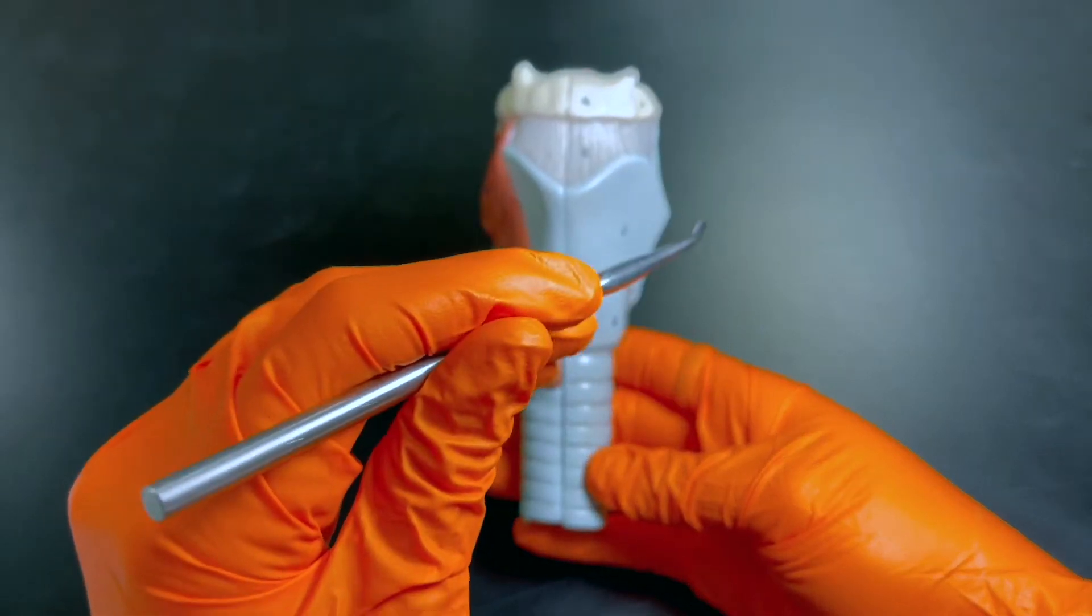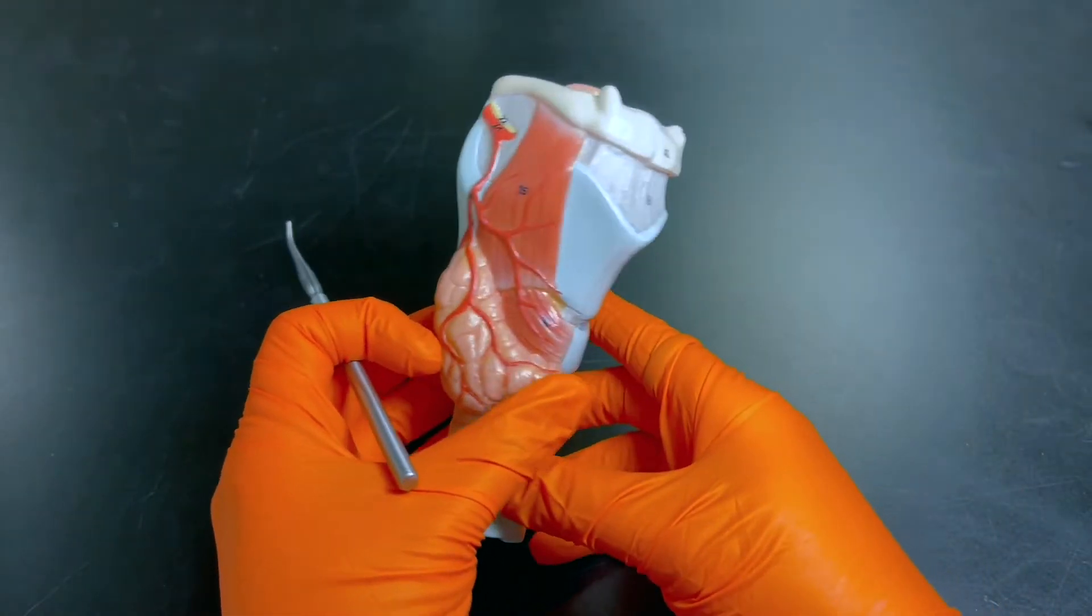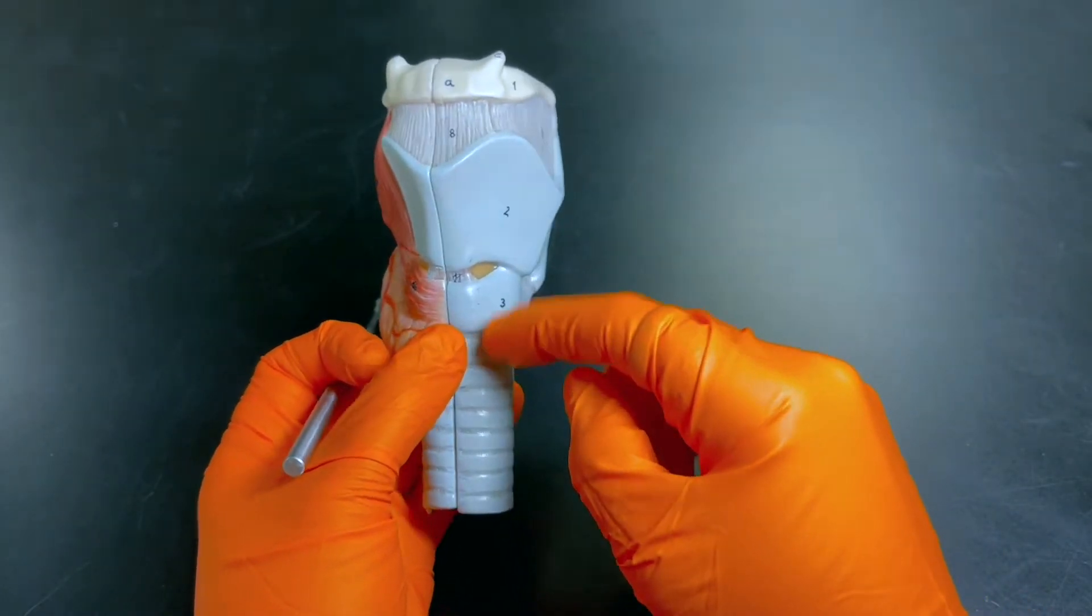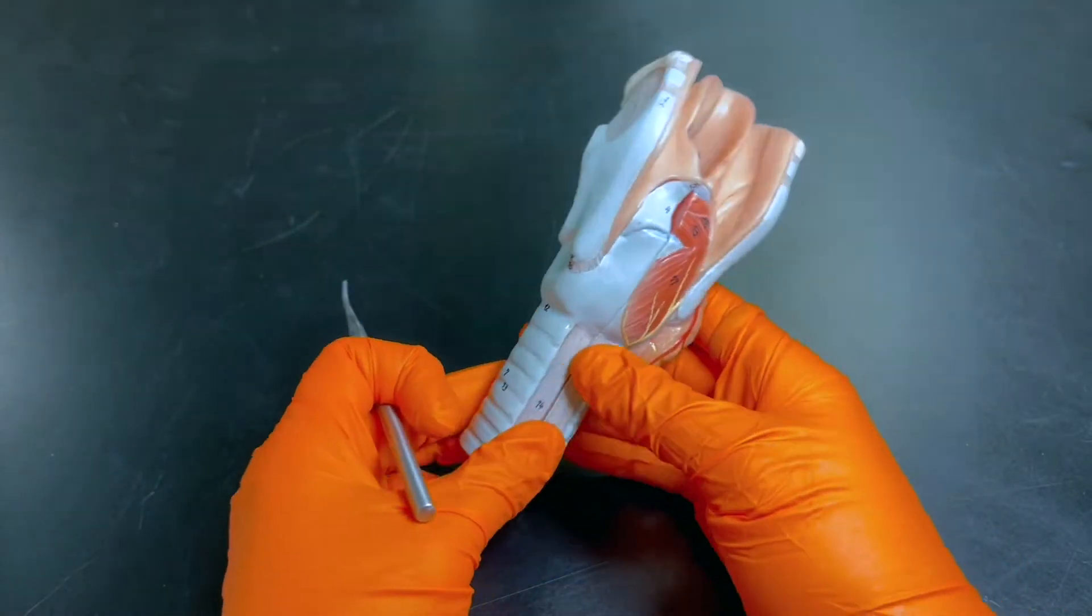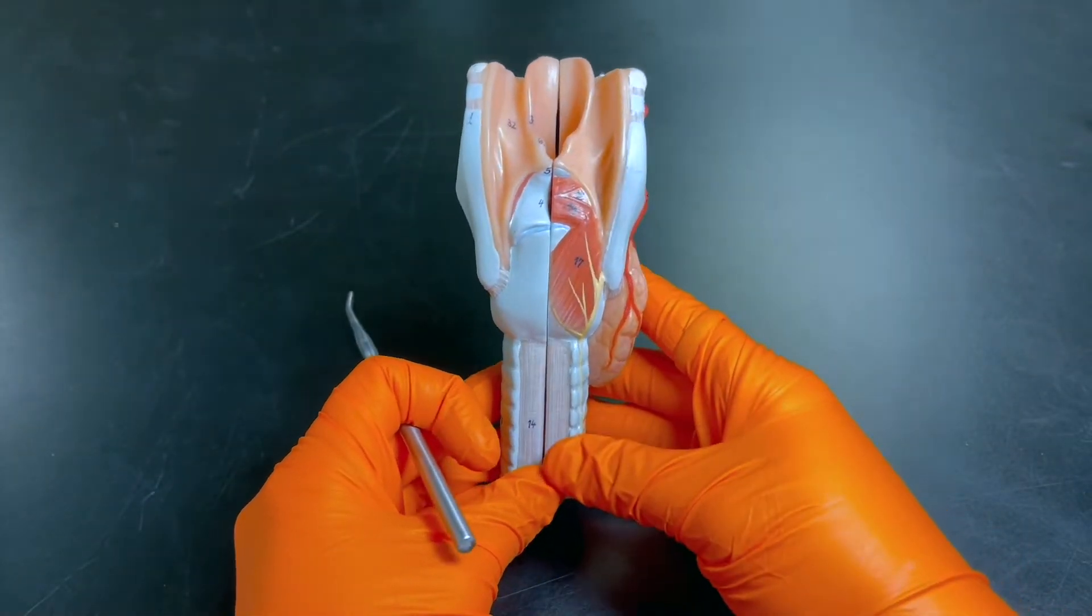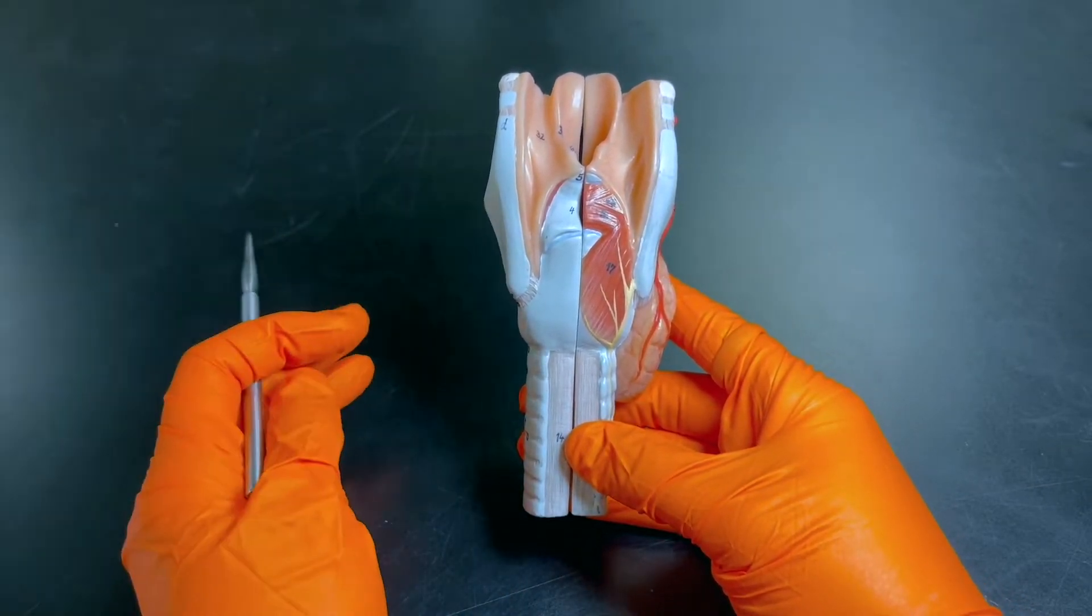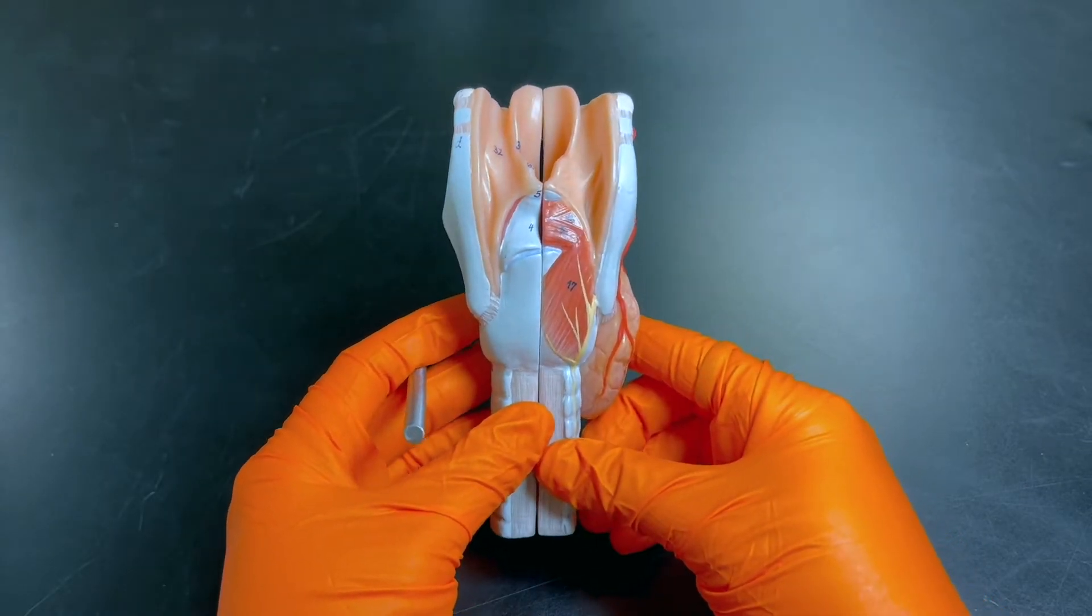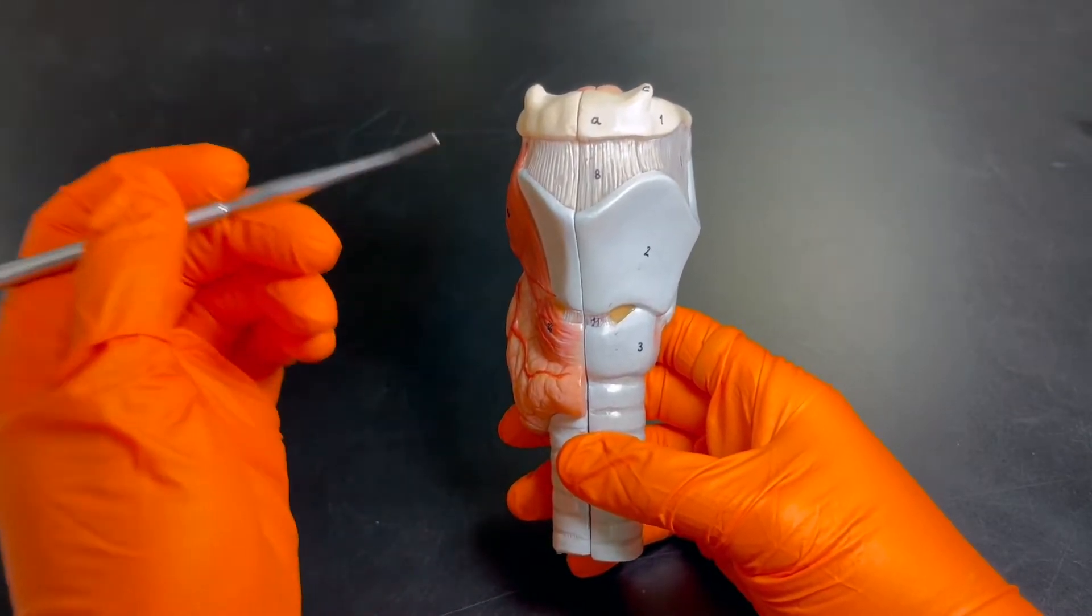When we're holding it like this, we are looking at the anterior side. This is the right, this is the left. Now recall that we're missing some stuff on this side - that's just the make of this model. All of this stuff is also over here, we've just removed things so we can talk about specific structures. This is the posterior side, so there are certain structures we can see better on this side than on the anterior side.